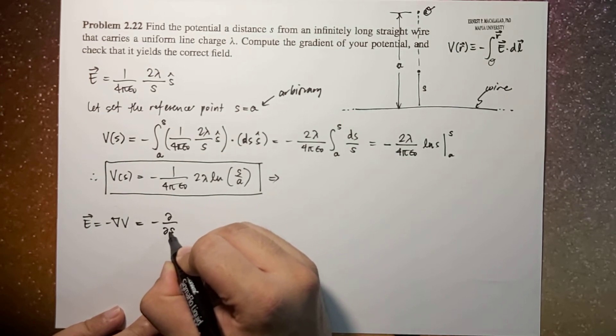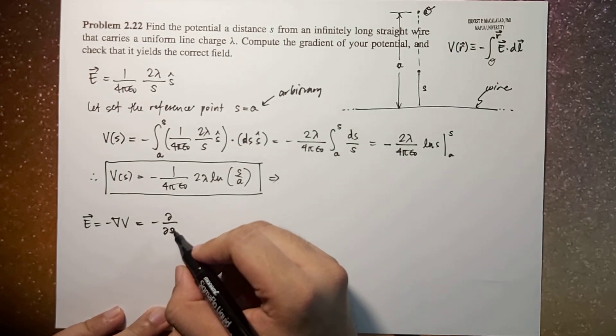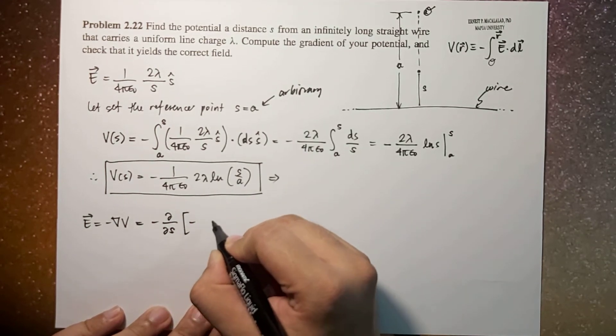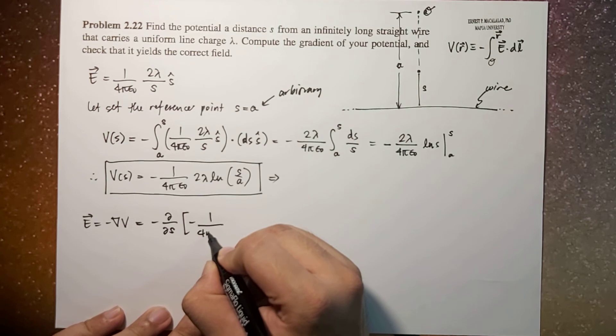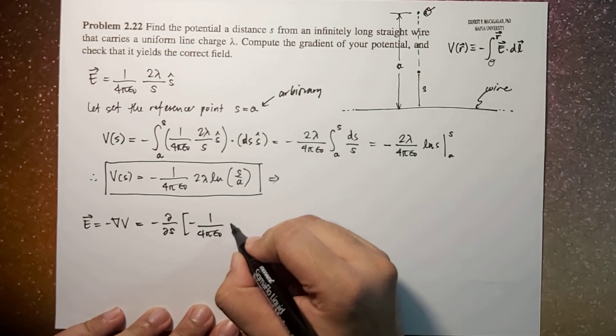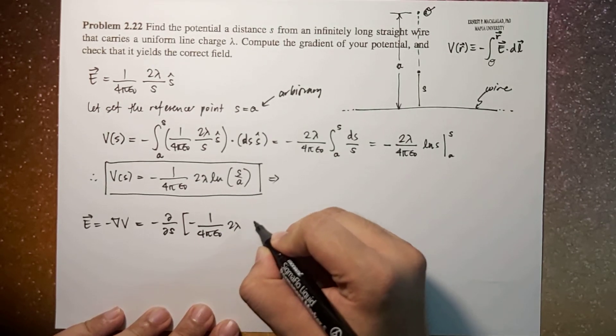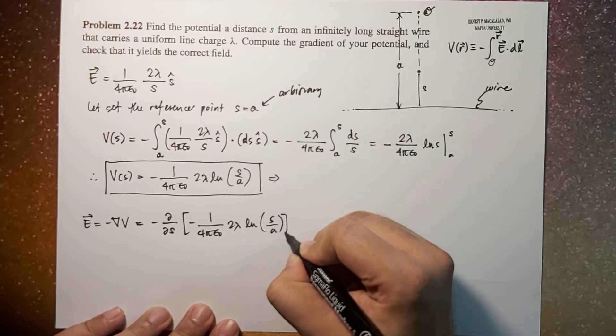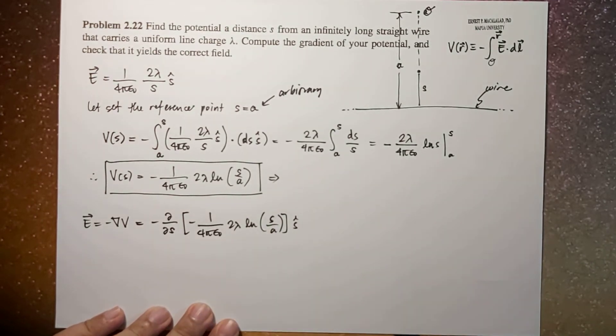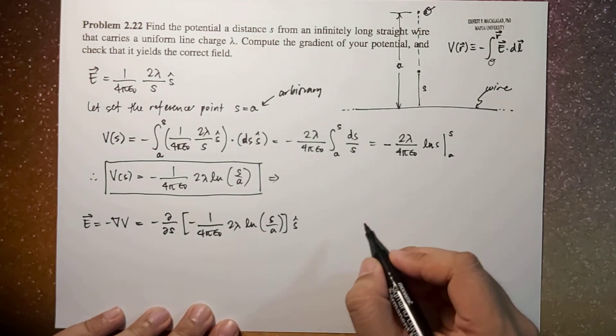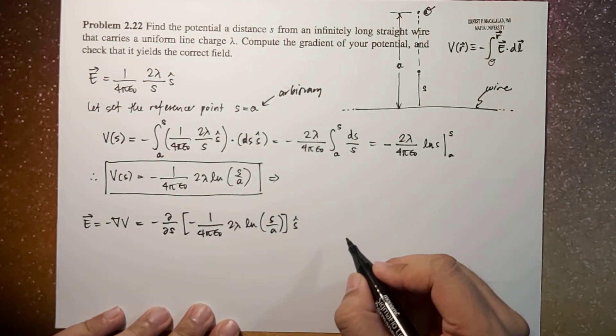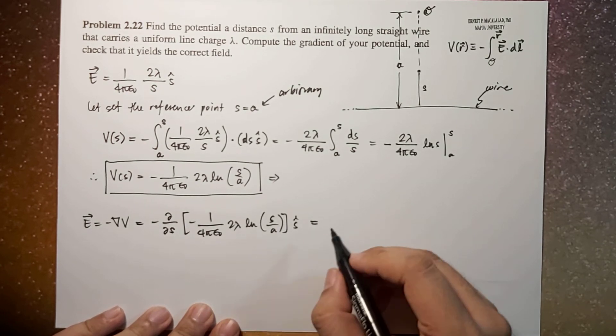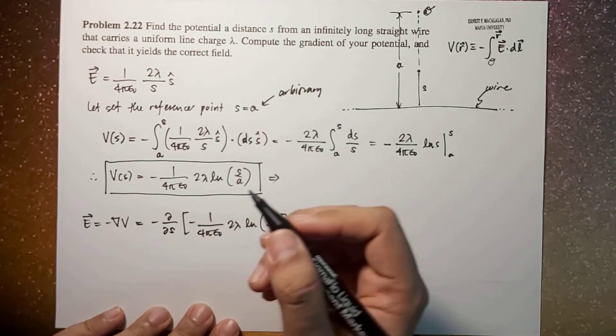So the remaining part of the gradient will only be this part. This may now be equal to negative partial derivative of this potential with respect to s. So this negative 1 over 4 pi epsilon naught times 2 lambda then ln of s over a, s hat.